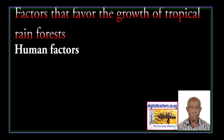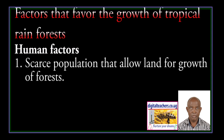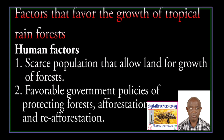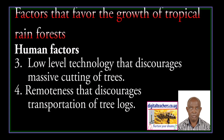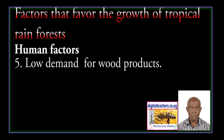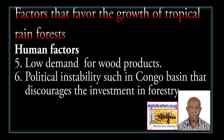Human Factors that favour the growth of tropical rain forests: Scarce population that allows land for growth of forests. Favourable government policies of protection, afforestation and re-afforestation. Low level of technology that discourages massive cutting of trees. Remoteness that discourages transportation of tree logs. Low demand for wood products. Political instability, such as in the Congo Basin, that discourages investment in forests.